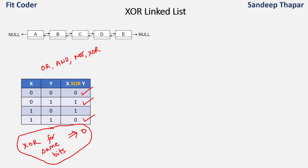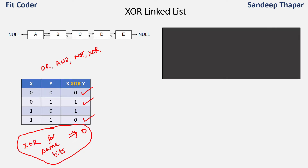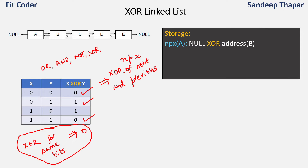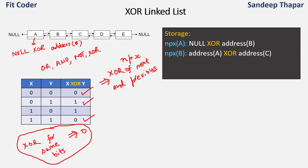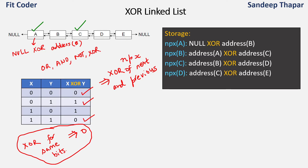Let's understand how to create the pointers in each node of the linked list. I will name these pointers npx, which is basically XOR of next and previous. For node A, npx is null XOR address of B. For node B, npx is address of A XOR address of C. Similarly, npx of D is address of C XOR address of E, and npx of E is address of D XOR null. This is how we calculate the npx pointers for each node.